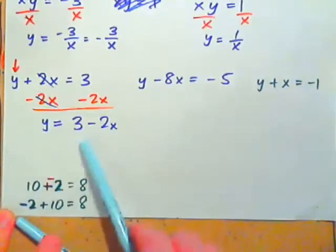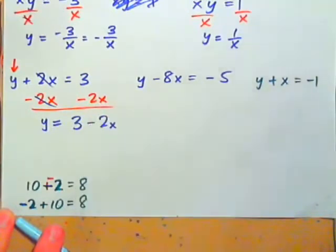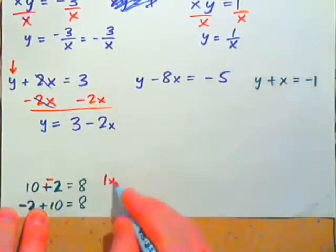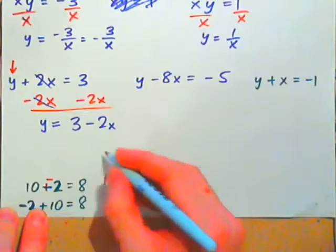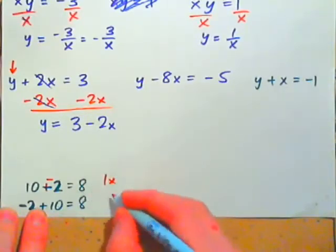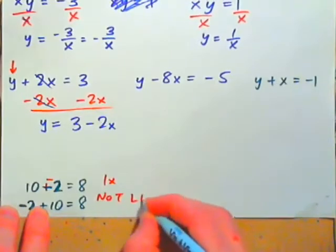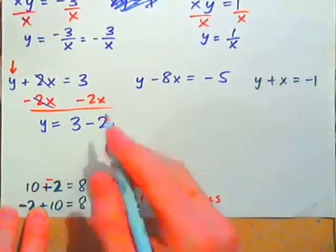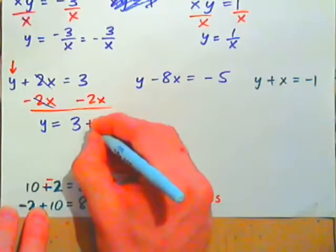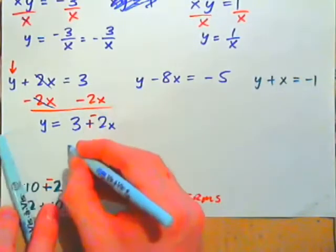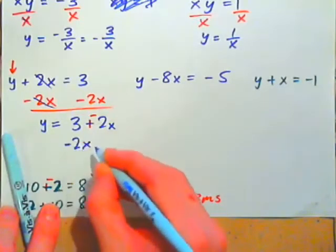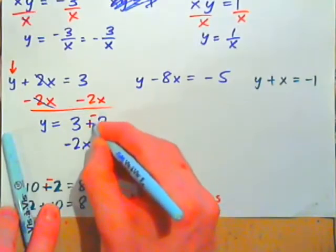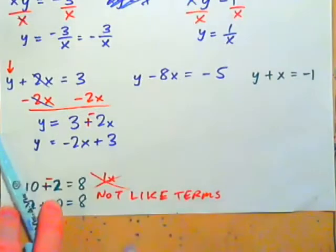Why can't we combine 3 minus 2X into 1X? Because these are not like terms — a constant and an X term cannot be combined. Changing the subtraction to plus negative, we get negative 2X plus 3. So Y equals negative 2X plus 3.